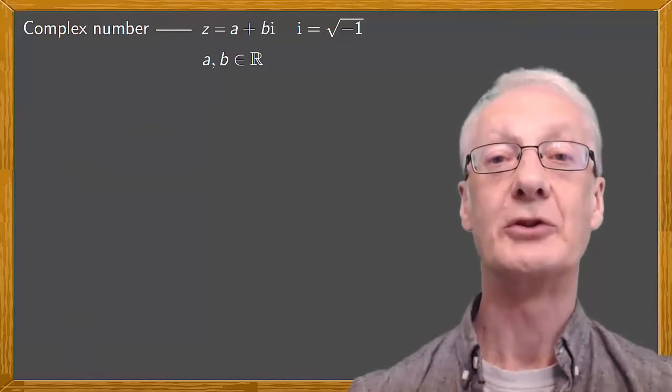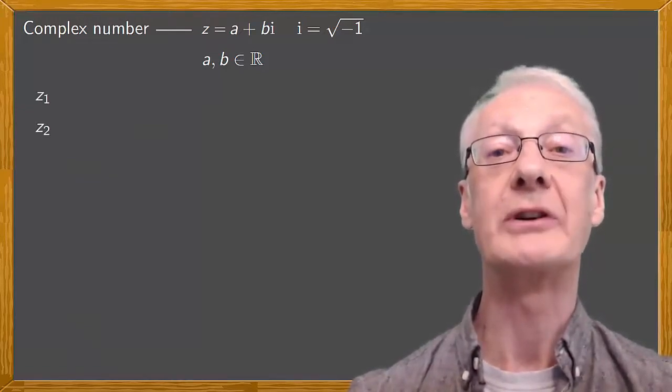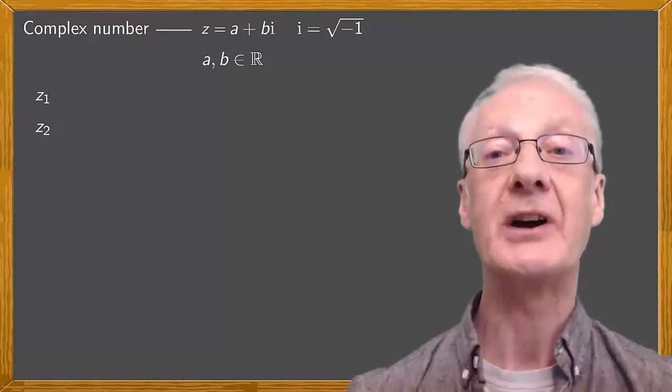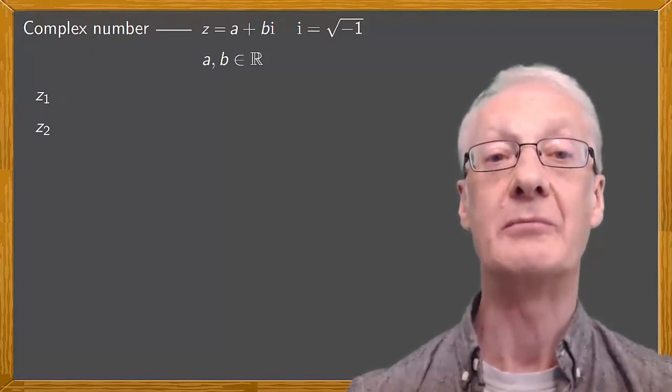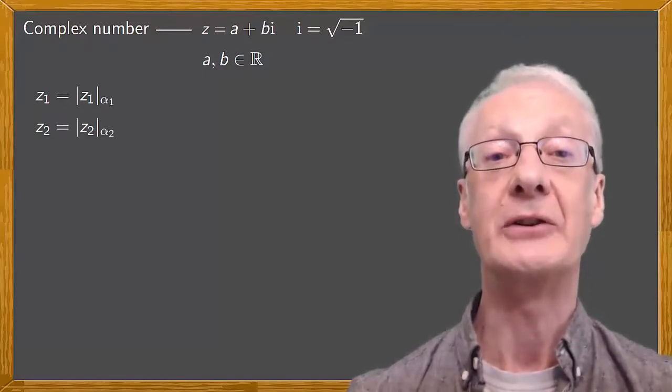In the case of multiplication, if we work with the polar form, we have two complex numbers, z1 and z2, specified by their polar coordinates, which are the modulus of z1 and alpha1, and the modulus of z2 and alpha2.